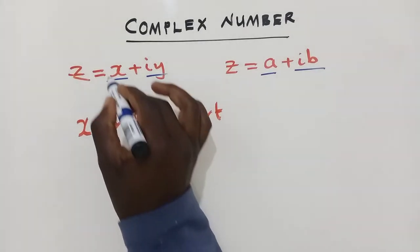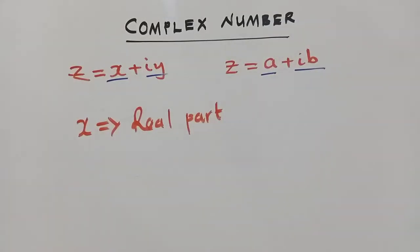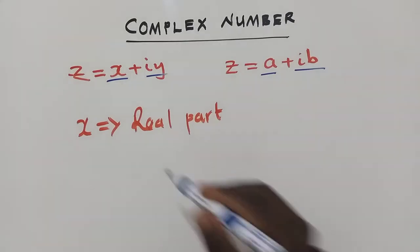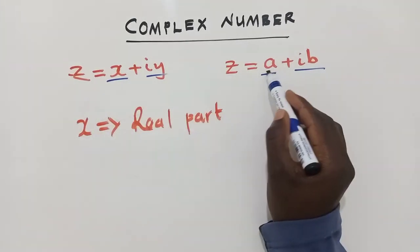So this is the real part, this one. Or even A. So this X and this A, these are real parts of the complex number.